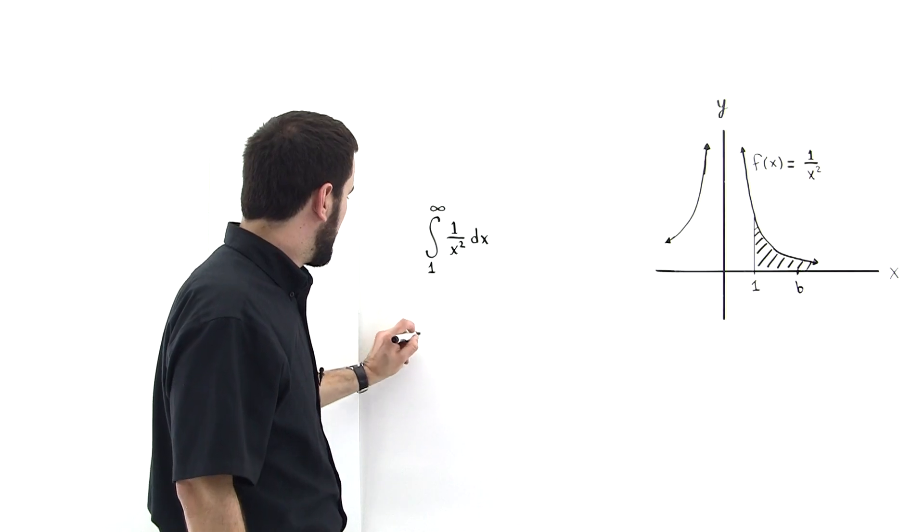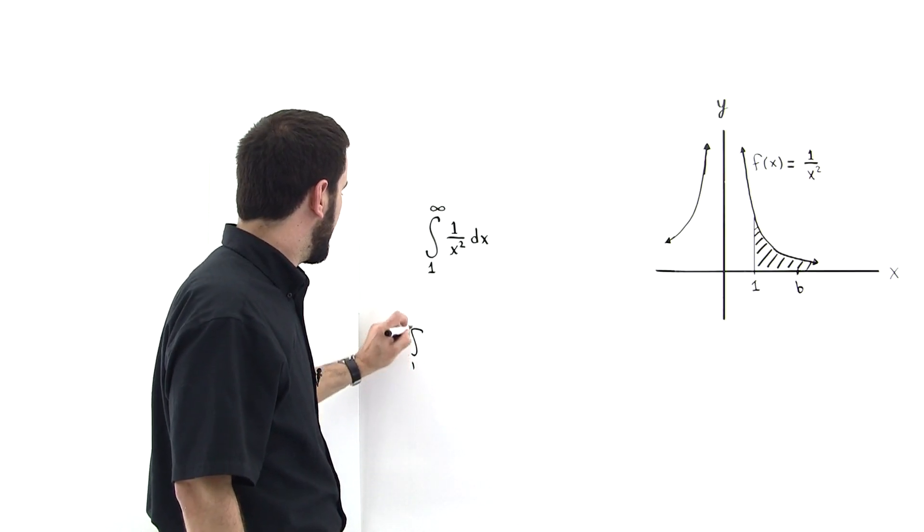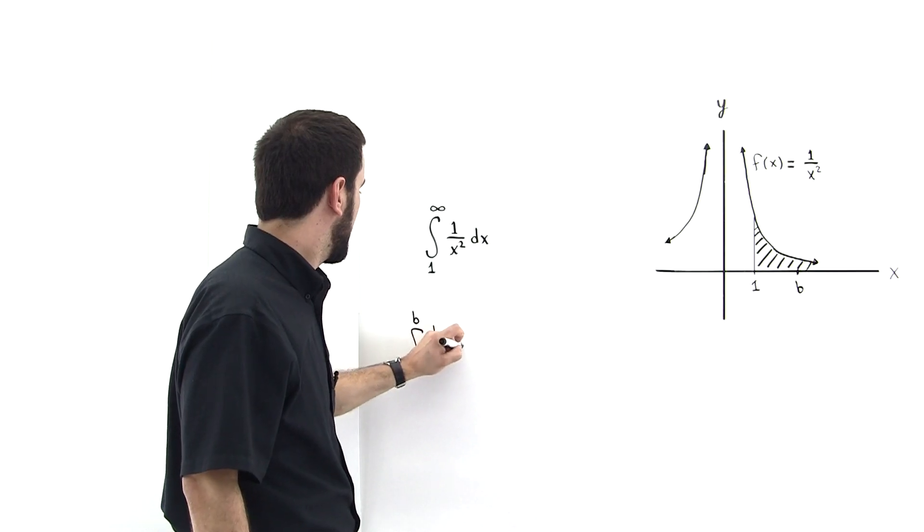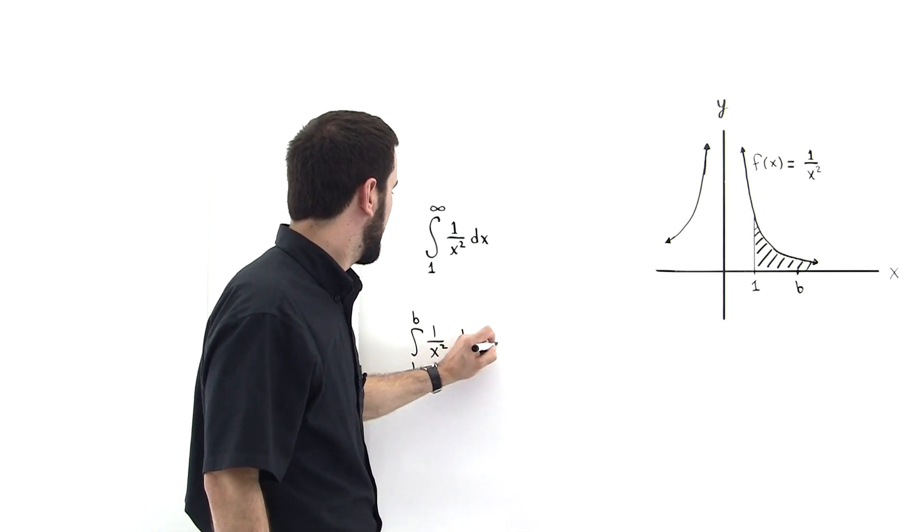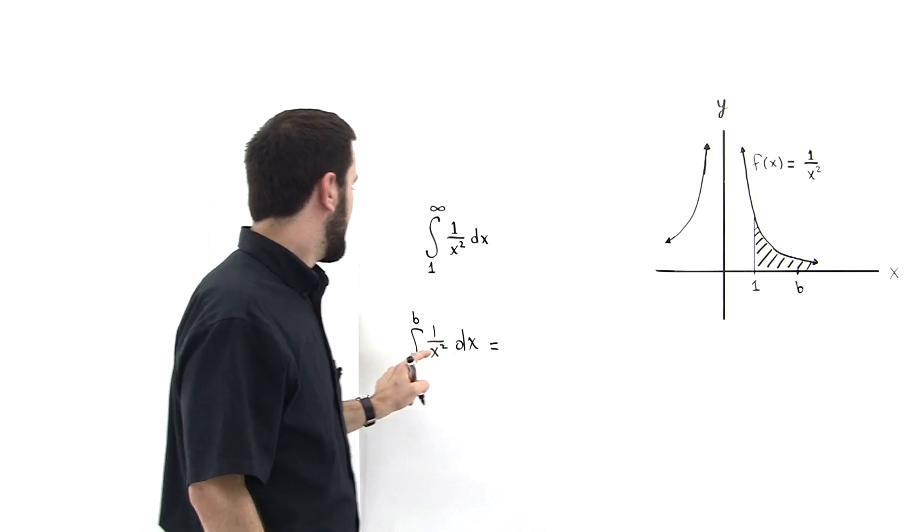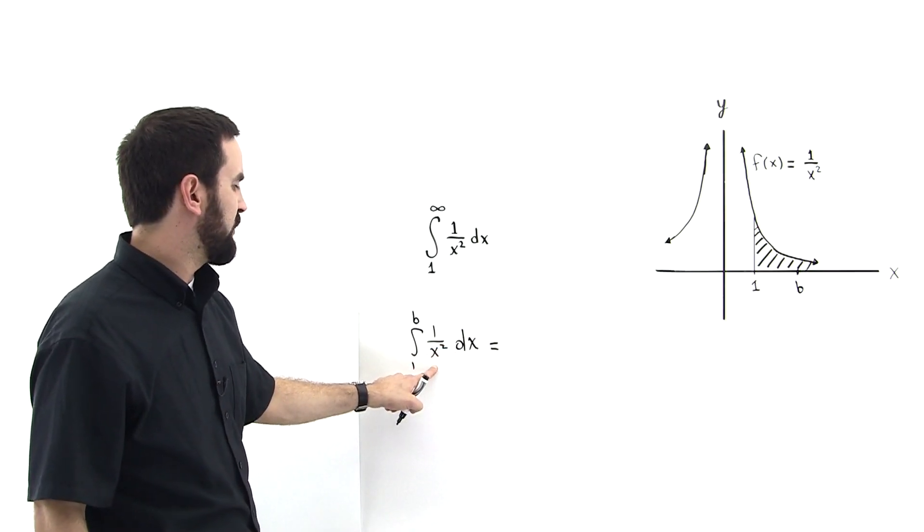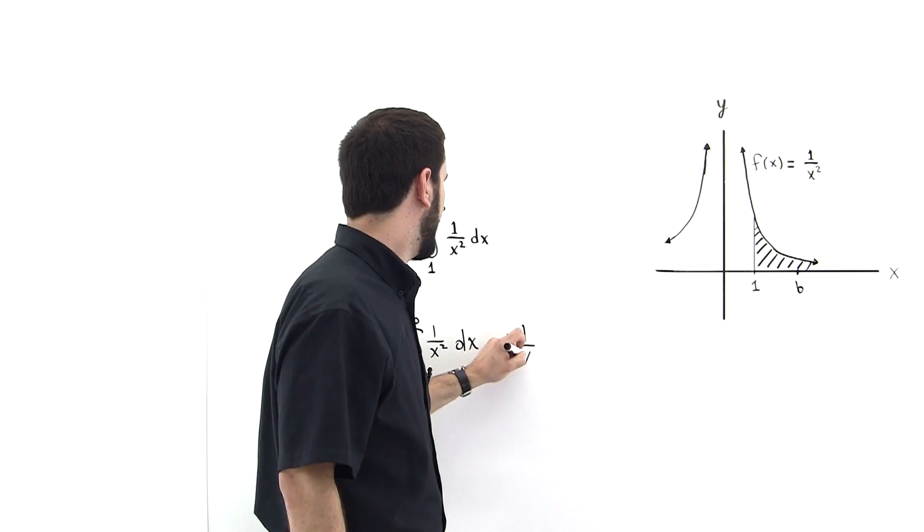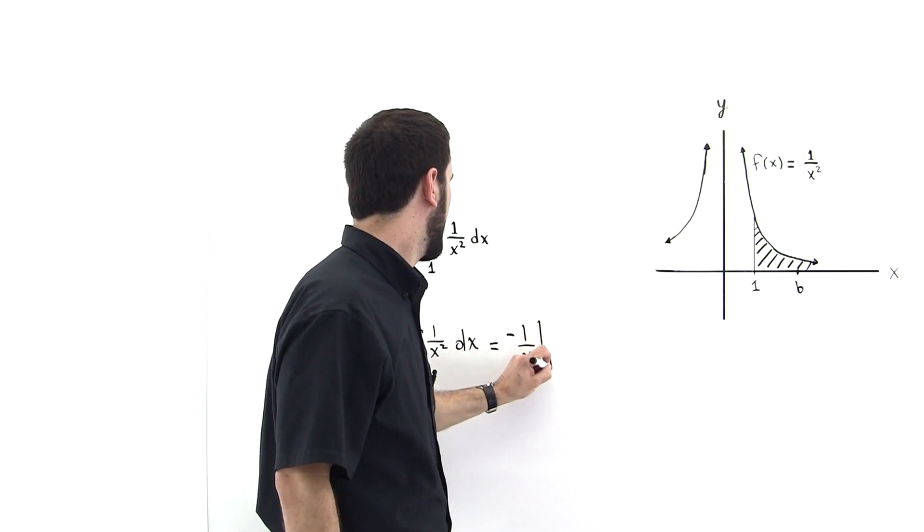So let's do the integral from 1 to b of 1/x² dx. This is equal to the anti-derivative of 1/x², which is -1/x, so we have -1/x evaluated from 1 to b.